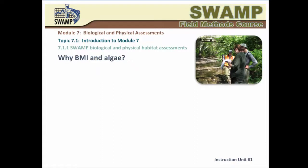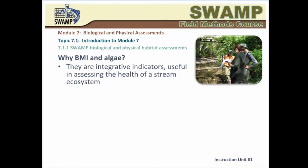Benthic macroinvertebrates, or BMI in short, are very useful indicators for assessing the health of our streams because they integrate the effect of environmental stressors over time. Algae communities are also integrative indicators that have been successfully implemented in a number of water quality monitoring programs around the country and the world. The Stream Physical Habitat, or PHAB in short, affects both BMI and algae communities.